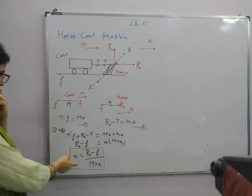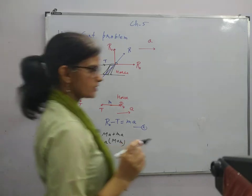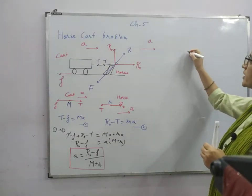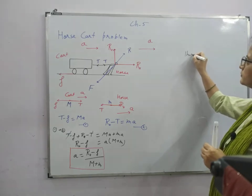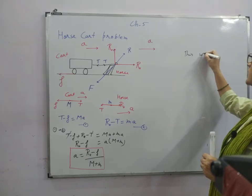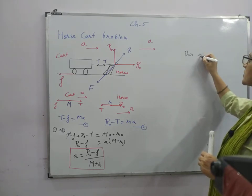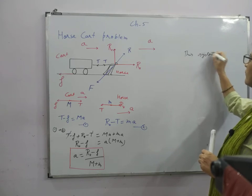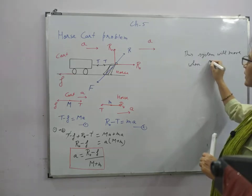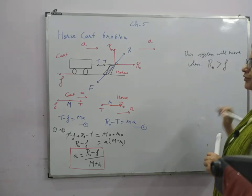We know that though this was the equation which we were supposed to find out. And this horse cart system will move only when this horizontal component of normal reaction is greater than the friction force. This system will move when the horizontal component is greater than the friction force.